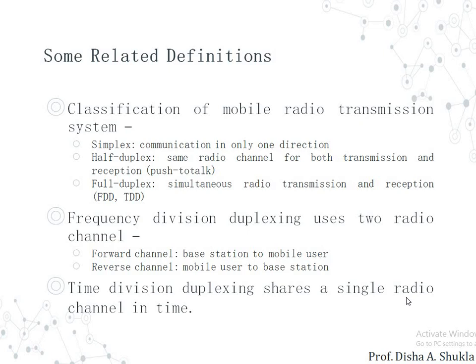The third type is full duplex, where simultaneous radio transmission and reception both occur — that is, the mobile phones we use today, where both sender and receiver can send data at the same time. Frequency Division Duplexing (FDD) uses two different radio channels: the forward channel (base station to mobile user) and the reverse channel (mobile user to base station). Time Division Duplexing (TDD) shares a single radio channel in time.